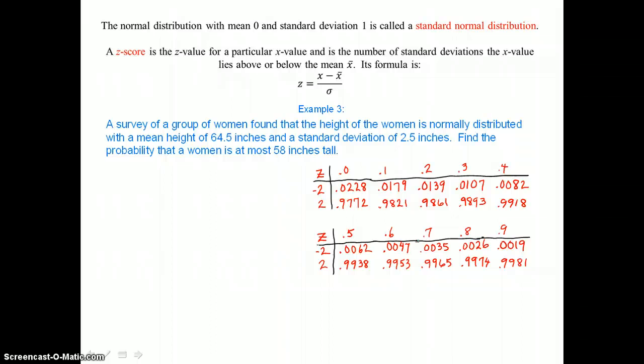In example 3, it says a survey of a group of women found that the height of the women is normally distributed with a mean height of 64.5 inches and a standard deviation of 2.5 inches. Find the probability that a woman is at most 58 inches tall.